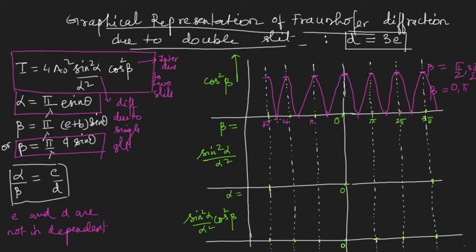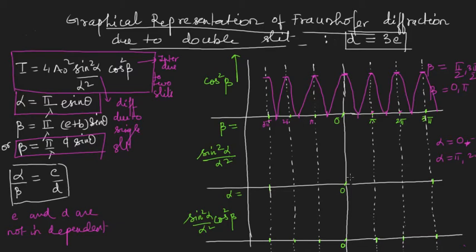Now we take the other term and draw separately sin²α/α² — this is diffraction due to single slit. Here we will get the primary maximum at α = 0, and then minima at α = π, 2π, and so on, because the numerator vanishes while the denominator does not. We have studied this in detail in diffraction due to single slit. There are secondary maxima as well, but I am not focusing on those here.